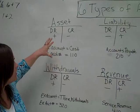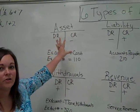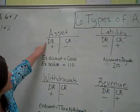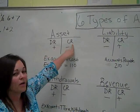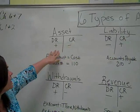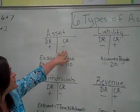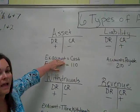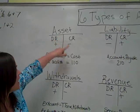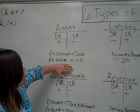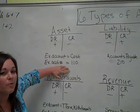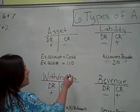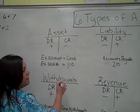Each of these accounts has certain identifiable characteristics. For the asset account, each T-account has the debit on the left and the credit on the right. You will have to identify which side is the plus, which side is the minus, give an example account — in this case, cash — and also an example account number. Assets always start with a one.